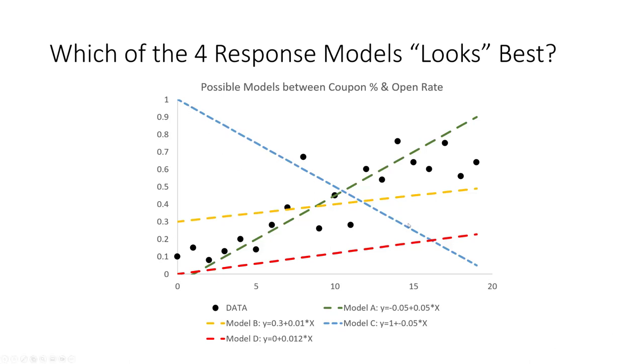Most people easily dismiss the blue one, model C, because the data appears to have a positive linear relationship and the blue one is clearly negative. Most people also quickly dismiss the red dotted one. Then typically there's debate between model B and model A, where most people tend to say that model A appears to fit the data a little better.